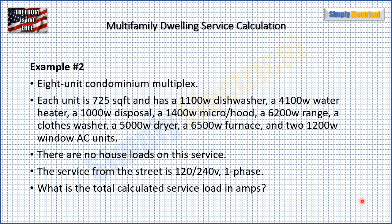Example number two: we have an eight-unit condo. Each unit is 725 square feet, has a 1,100 watt dishwasher, 4,100 watt water heater, 1,000 watt disposal, 1,400 watt micro hood, 6,200 watt range, a 5,000 watt dryer, 6,500 watt furnace, and two 1,200 watt window AC units. No house loads, 120/240 volt single phase service. What is the total calculated service load in amps?